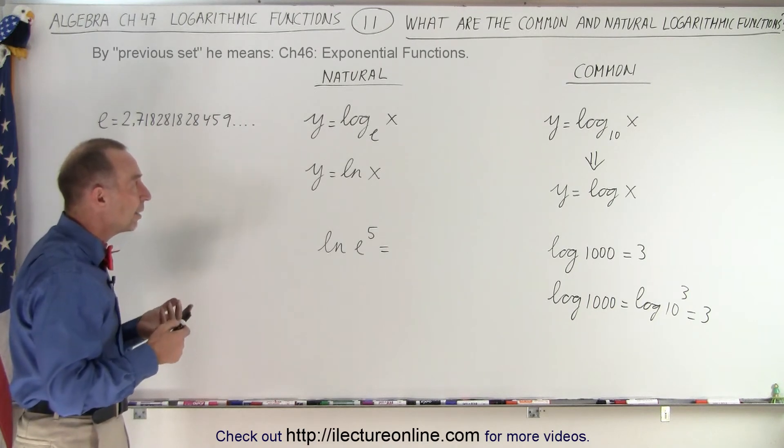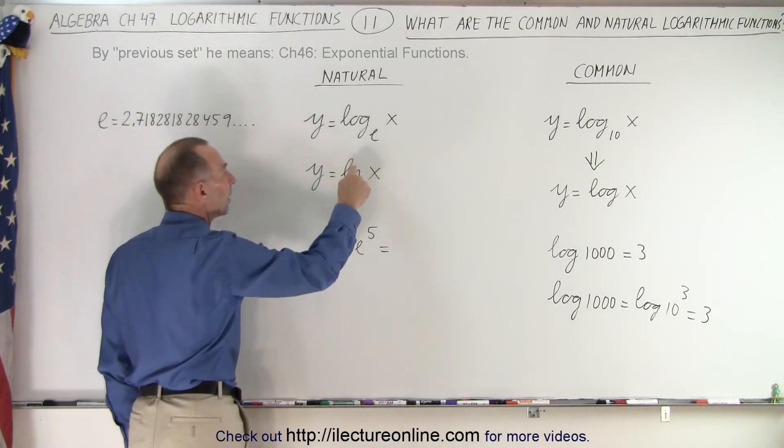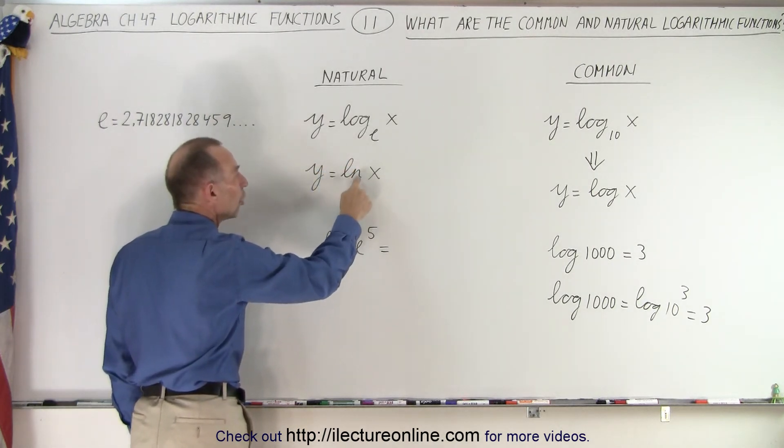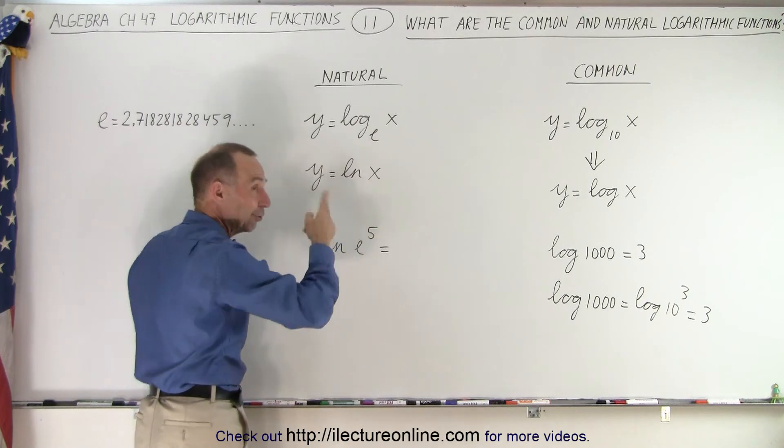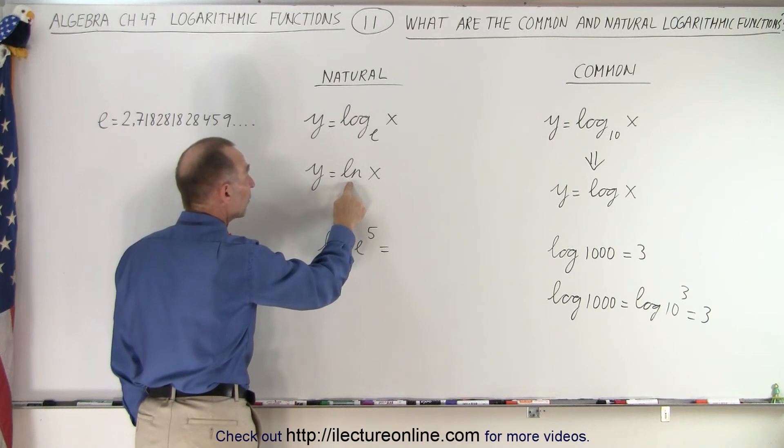Now, when we write y equals the log base e of x, instead of writing it like this, we write it like this, ln. It's called the natural log, even though the words are reversed. y equals ln x means the natural log of x, which means the log base e.